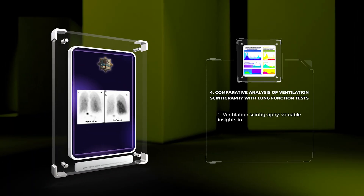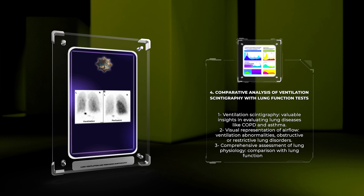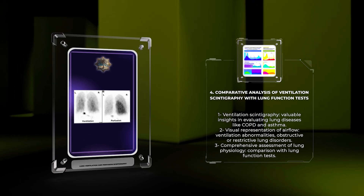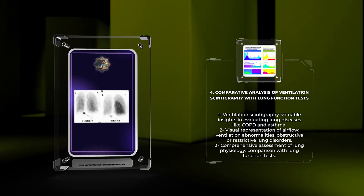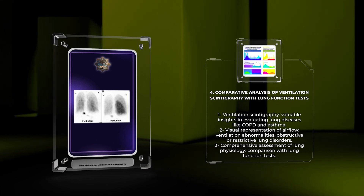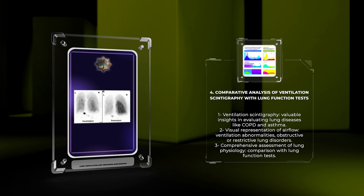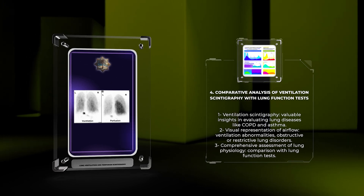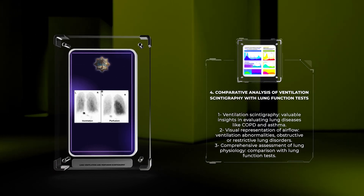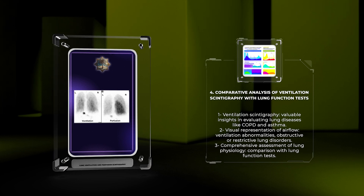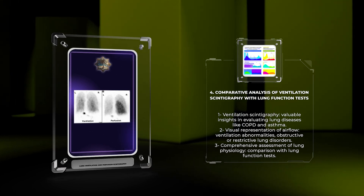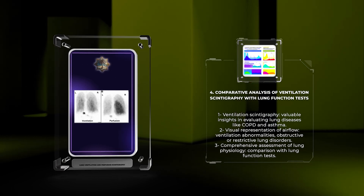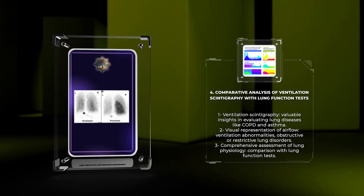In the evaluation of lung diseases such as chronic obstructive pulmonary disease, COPD, and asthma, ventilation scintigraphy offers valuable insights that complement traditional lung function tests. Ventilation scintigraphy provides a visual representation of airflow within the lungs, emphasizing areas of ventilation abnormalities such as obstructive or restrictive lung disorders. By comparing the findings of ventilation scintigraphy with lung function test results, clinicians can obtain a comprehensive assessment of lung physiology, aiding in accurate diagnosis and personalized treatment plans.